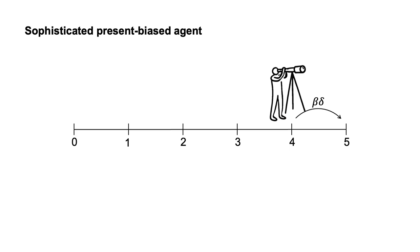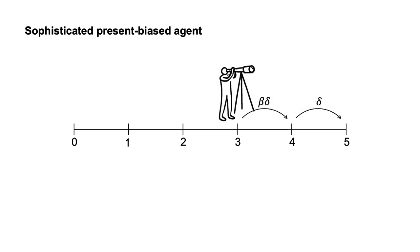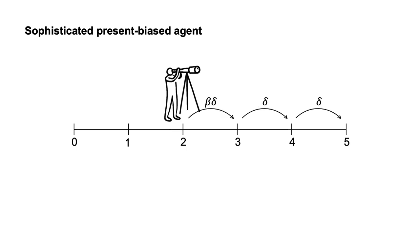Absent the ability to commit to an action, they will resign themselves to giving into temptation in advance. They repeat this process as they move back to today.